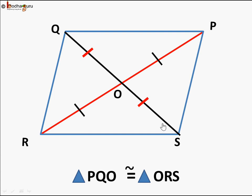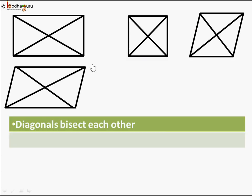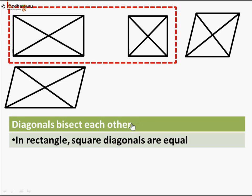Let's revise the properties of a parallelogram. Rectangle, square, and rhombus are all forms of parallelogram. For all of them, diagonals always bisect each other — the diagonals meet at a point such that each half is equal. But rectangle and square have an additional property: both diagonals are equal in length.